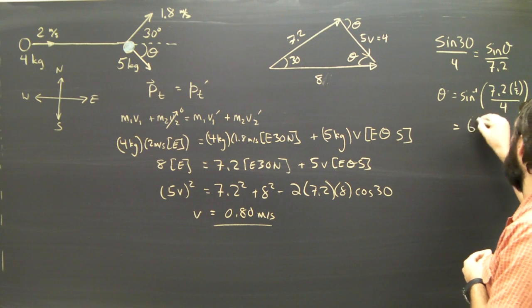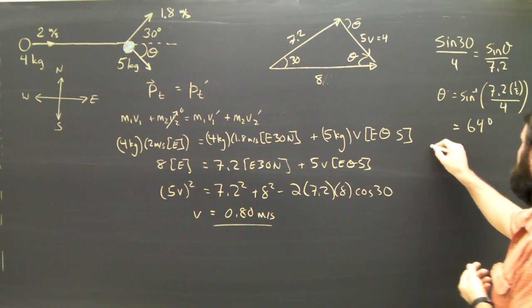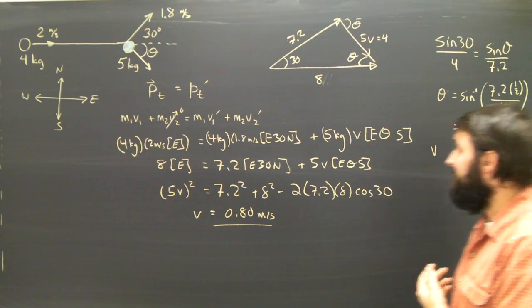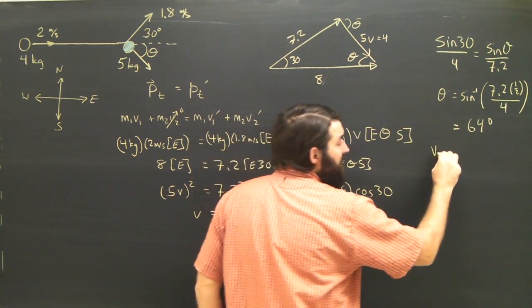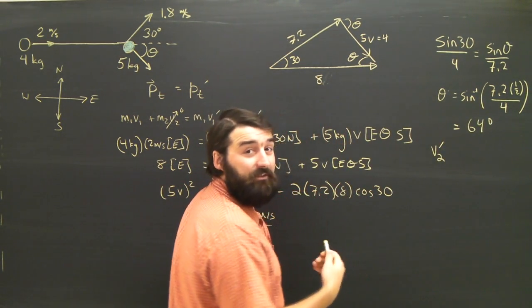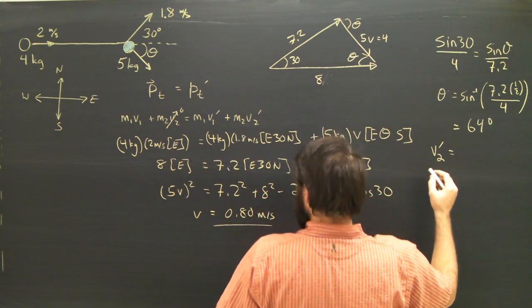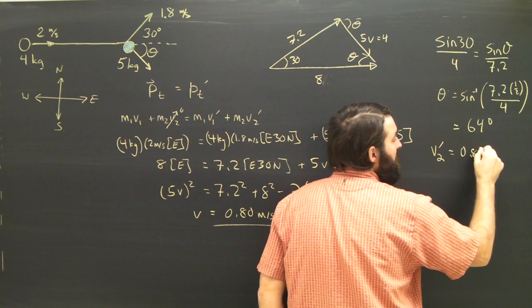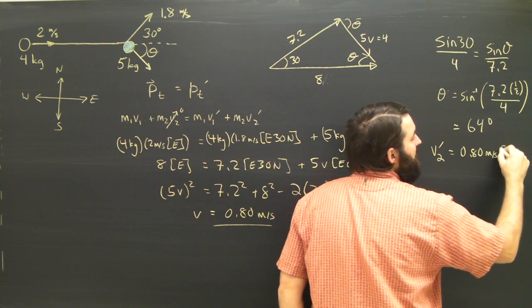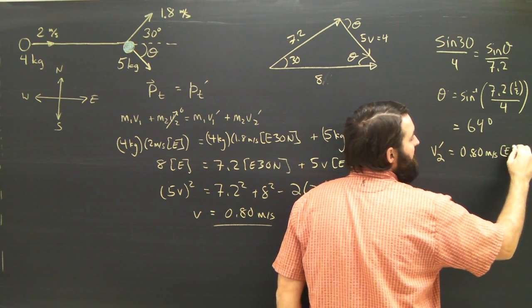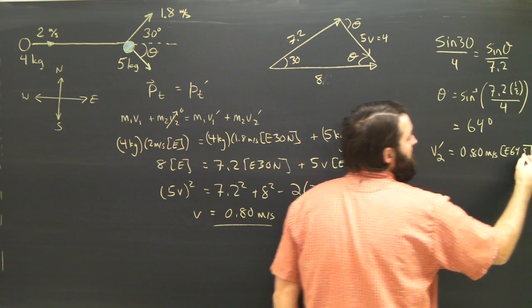I end up with an angle of 64 degrees. Which leads me to say that the velocity, technically it's object 2 velocity after the collision. So V2 prime is 0.8 meters per second east 64 south.